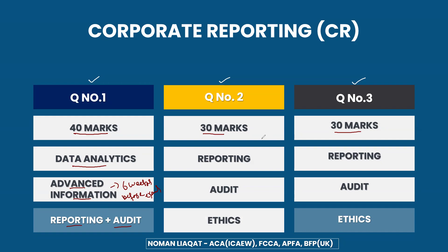Questions 2 and 3 simply involve the reporting side, your auditing concepts, and ethics. In Questions 2 and 3 you may have reporting, audit, and ethics requirements — or it could be a major portion of audit with a small portion of reporting and ethics. It could be anything, but you have to prepare and study the whole syllabus because anything could be examined and we have to prepare for each and everything.